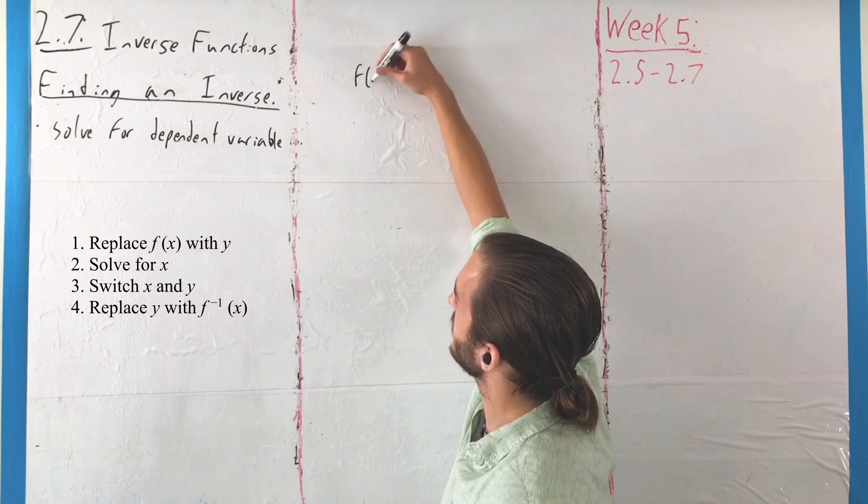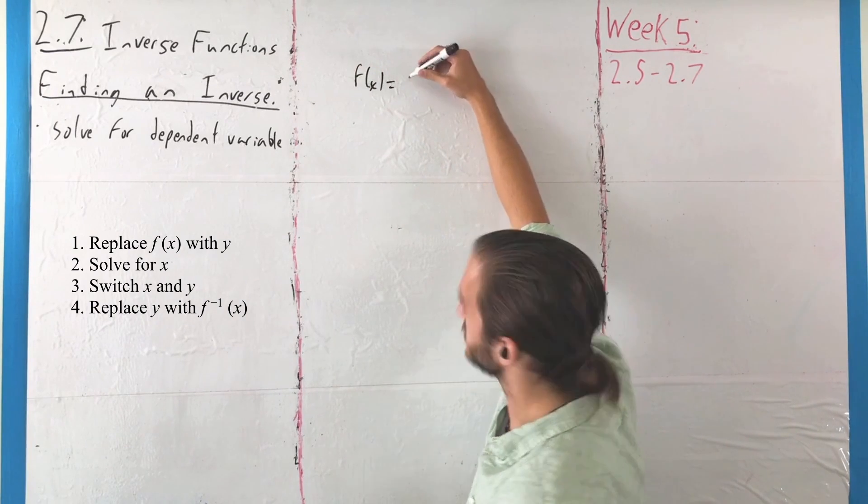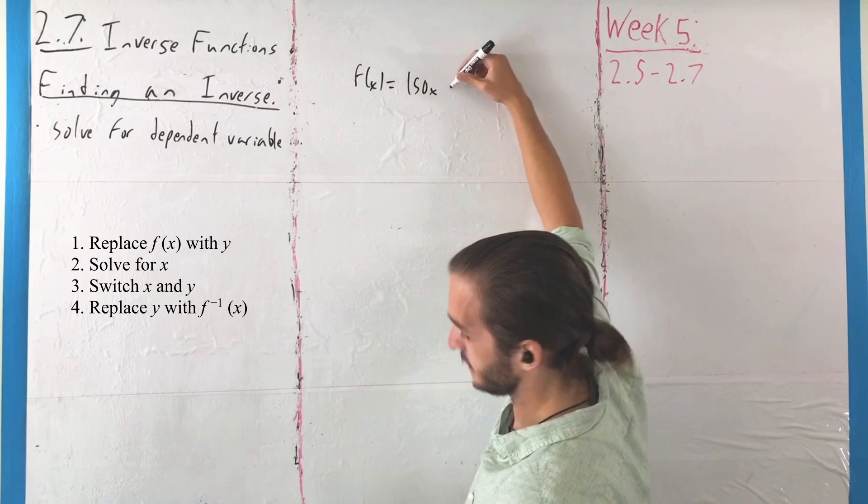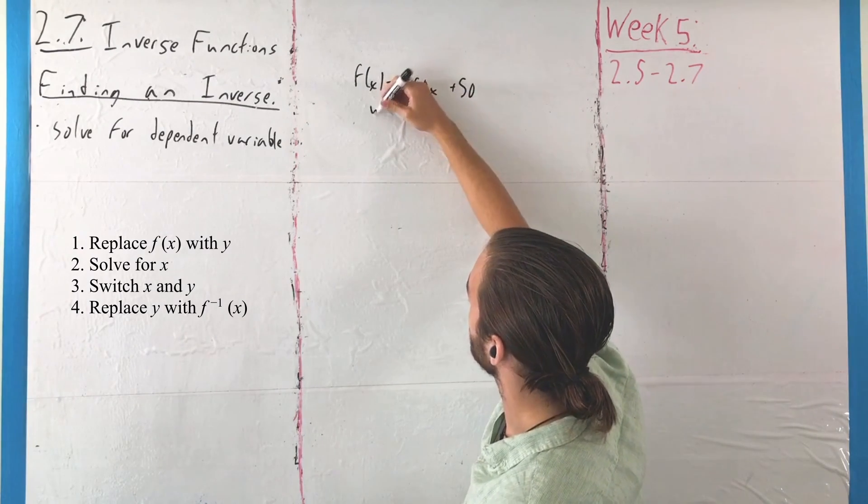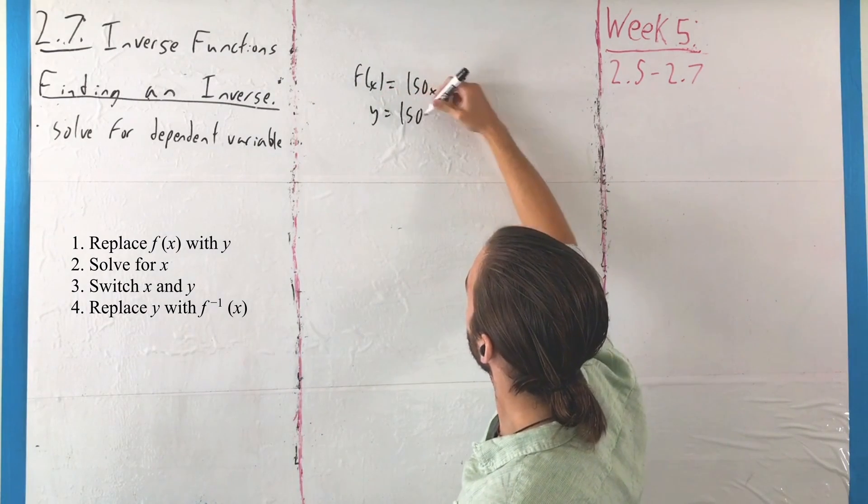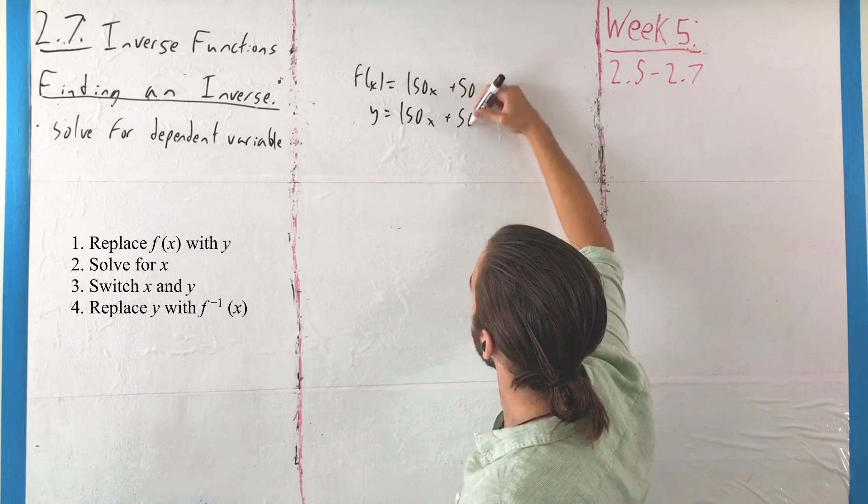So if we say that f of x is equal to 150x plus 50, then we replace f of x with y. y equals 150x plus 50.